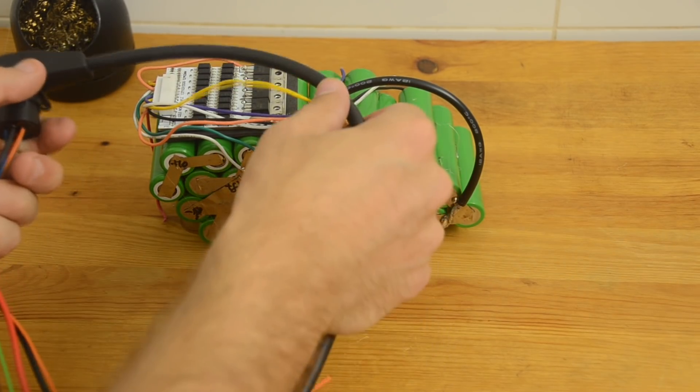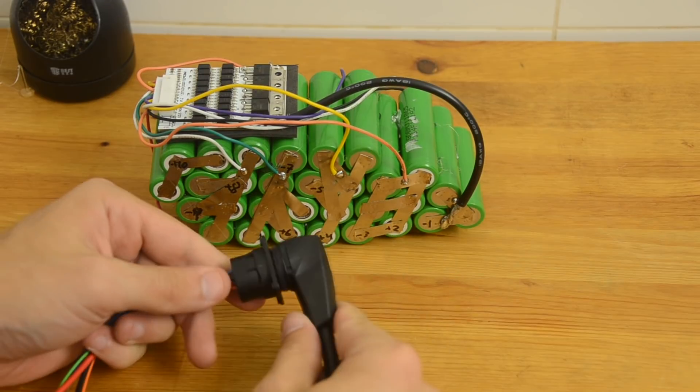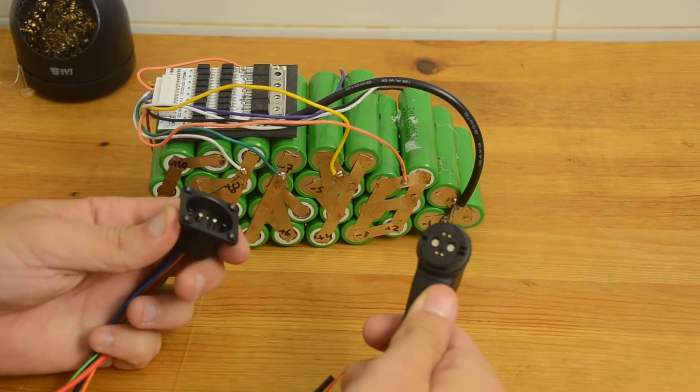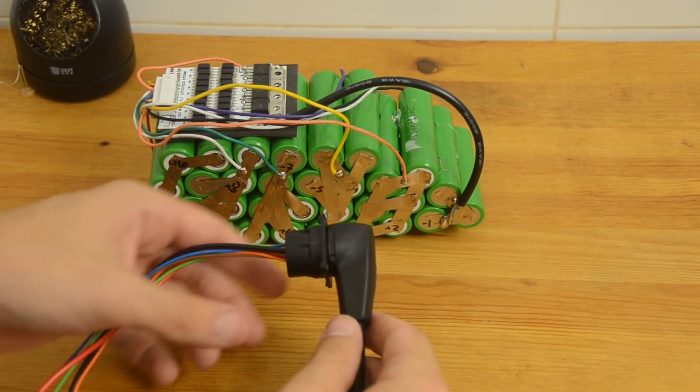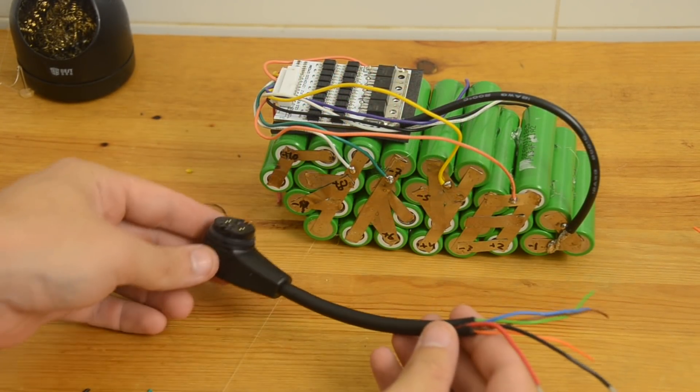Now I'll use this neat Rosenberger magnetic connector that I got from LunaCycle.com for my discharge connector. This will be much easier for my wife to connect to her bike than her old Anderson PowerPole connectors that she was always complaining to me about.